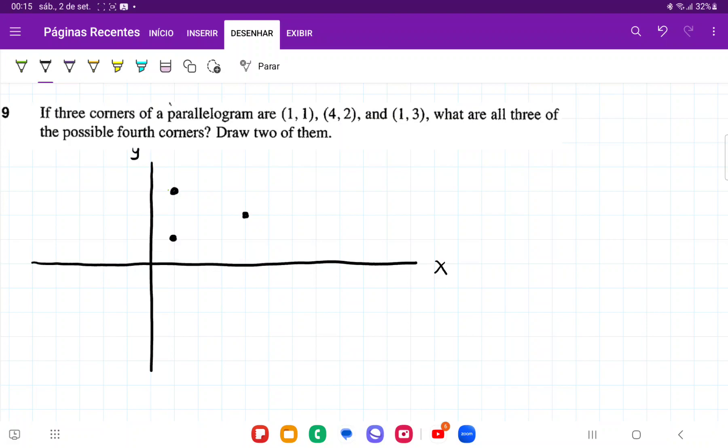So a parallelogram has opposite sides that are parallel, and so the first side that I'm going to make parallel is this one here, and I'm going to make it to the right. So I'm going to bring it up here. Yeah, so we can see that these points are connected by taking the lower point and just going up 2.